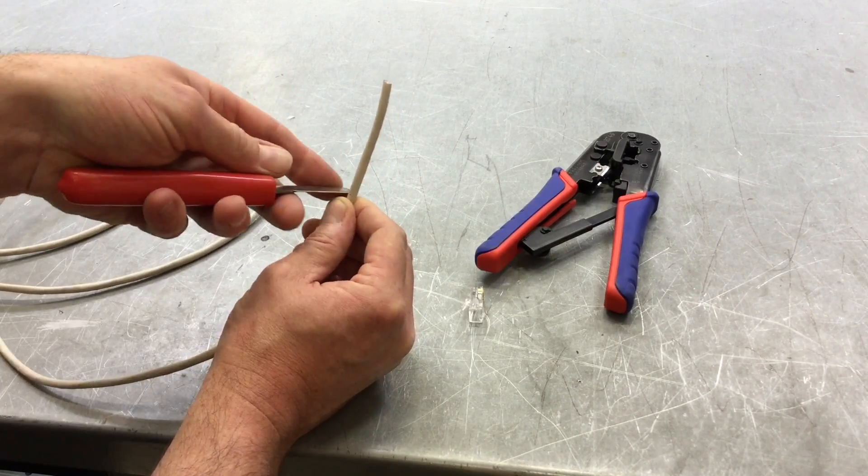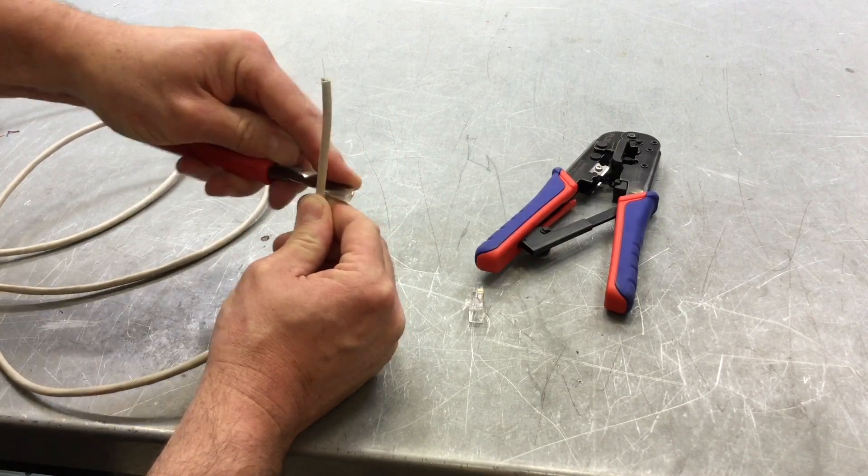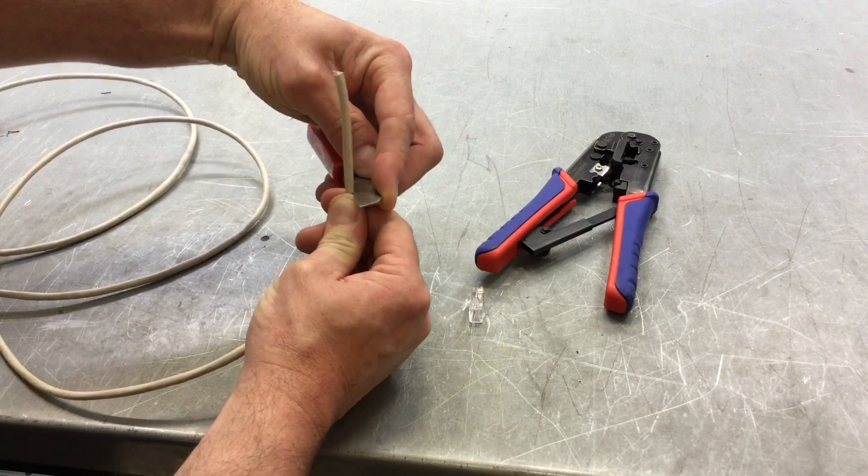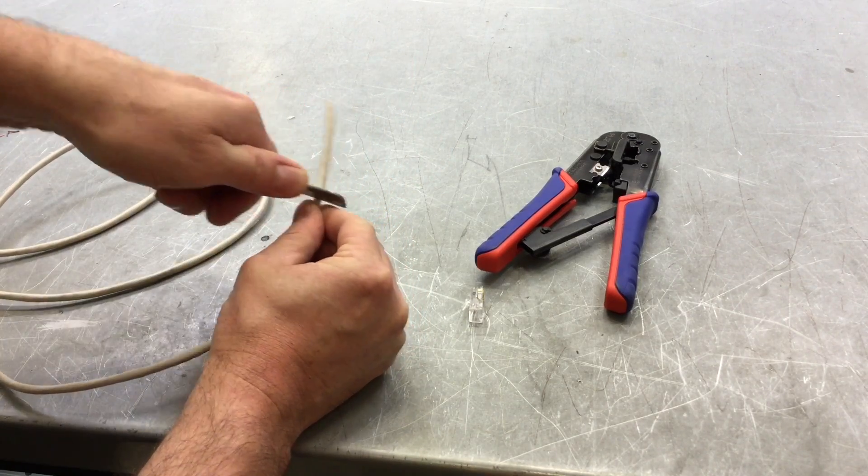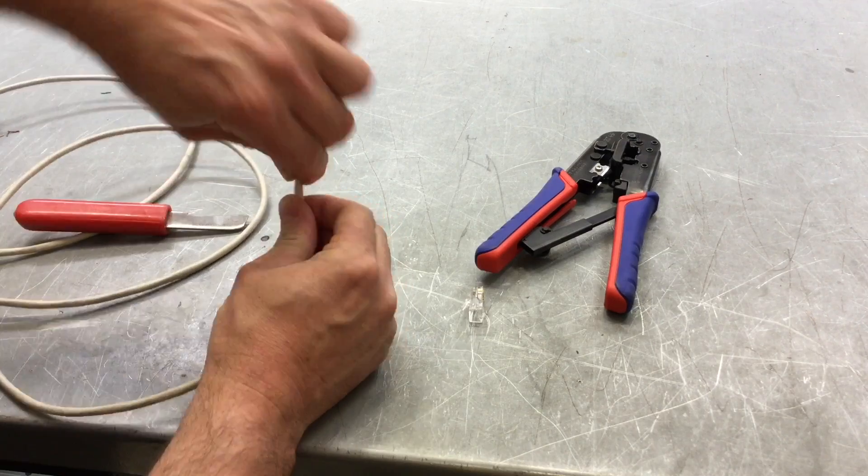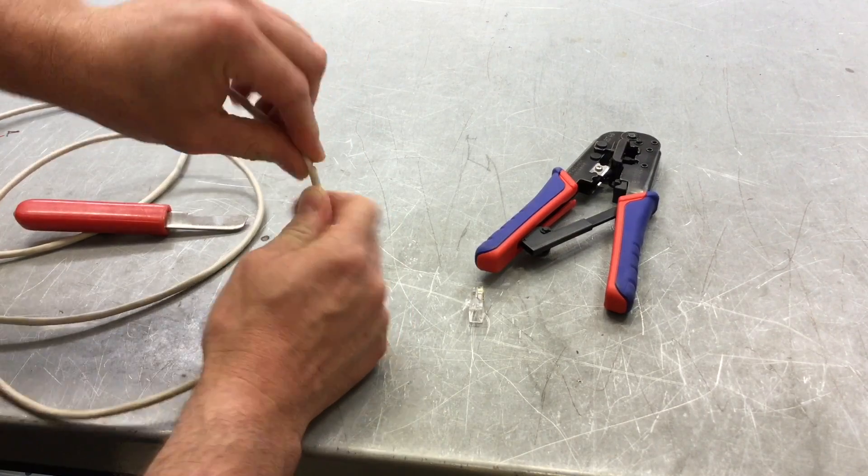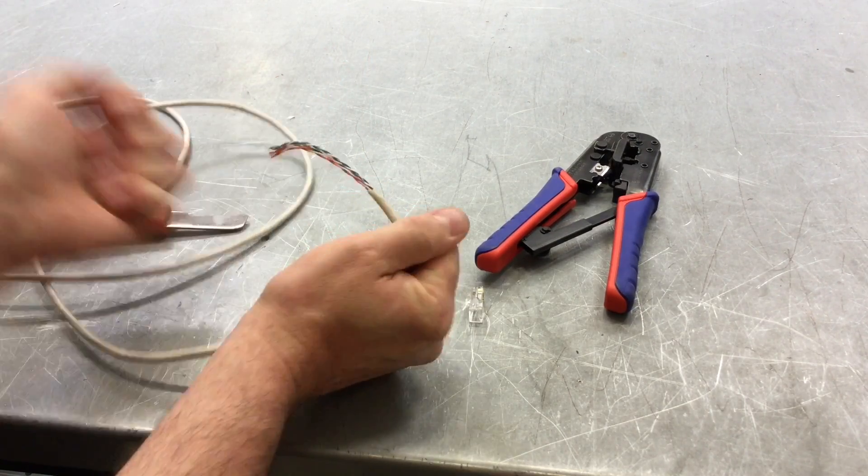So press quite firmly with this knife. Score around, not saw, just score around the conductors, cut through the insulation. And then hopefully it will remove from the cable.